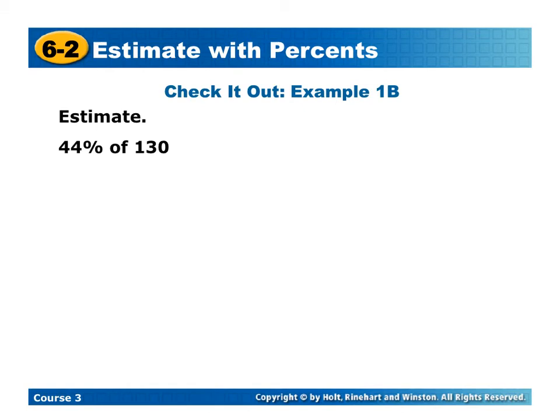Alright, here's another one for you to try on your own. So 44%. I'm just going to go ahead and round to 40% again, which as we know is 2 fifths. Since it's 2 fifths of 130, I'm going to first find that 1 fifth of 130, which is 26.